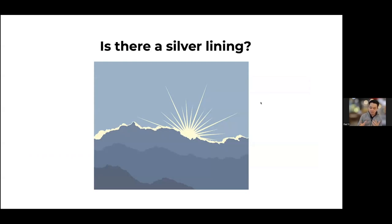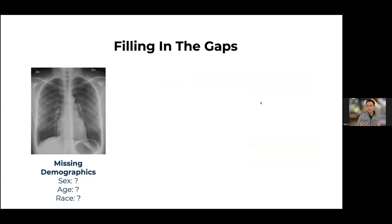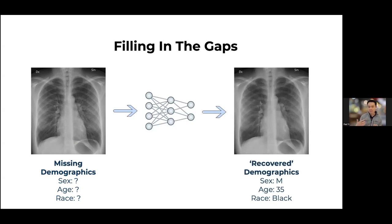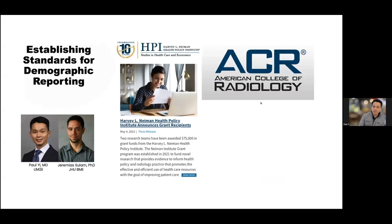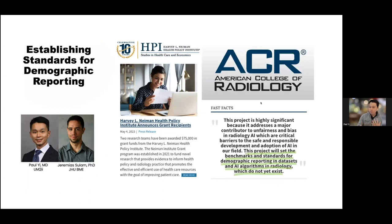Is there a silver lining? I think we can use these unintended features for our benefit. Since data sets are often missing demographic metadata, we can take algorithms trained to identify sex, age, and race and use them to recover missing information and create more complete data sets — improving curation and using these algorithms for good. One exciting initiative we're doing, in collaboration with colleagues at Hopkins BME and the American College of Radiology, is establishing standards for demographic reporting. This is a new field and we're learning as we go.